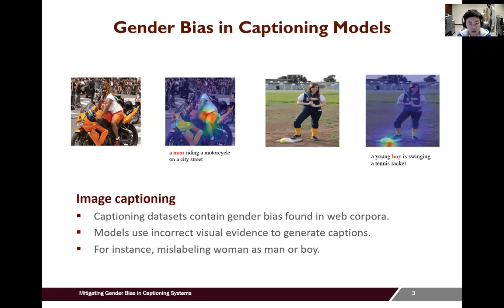In this work, we focus on the image captioning task and find captioning datasets, such as COCO, contain gender bias from web corpora. The task has images with humans in varied poses and with different levels of obscurity, making gender identification far more challenging. As a result, learning models may heavily rely on image context for gender identification, leading to incorrect or even offensive errors — for example, predicting a woman as a man based on the appearance of a motorcycle.